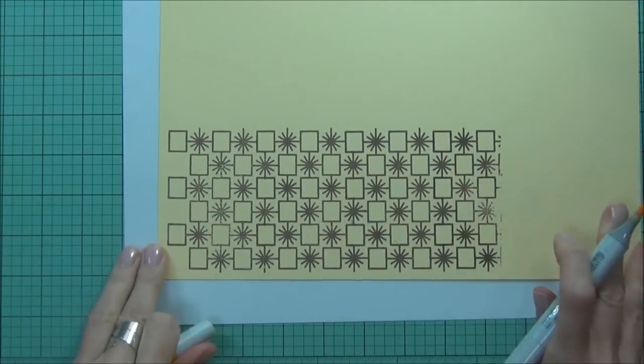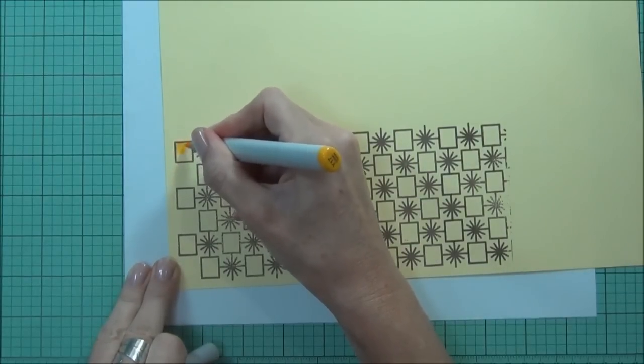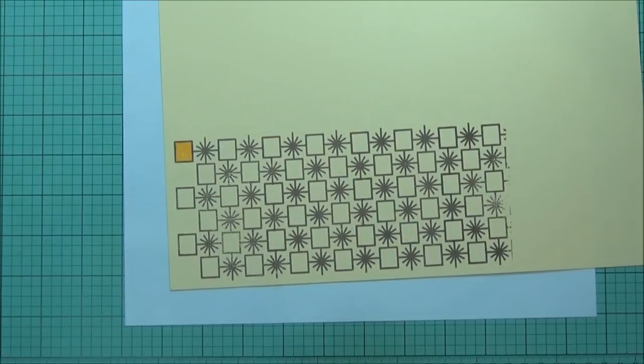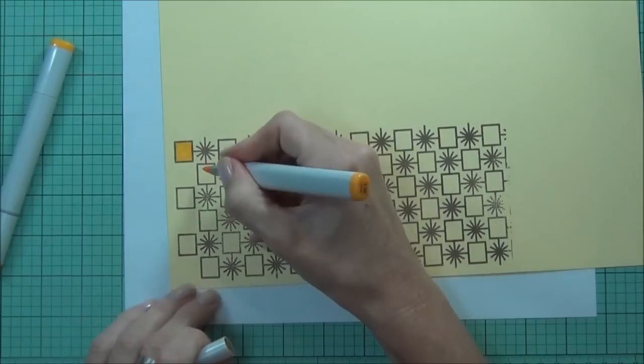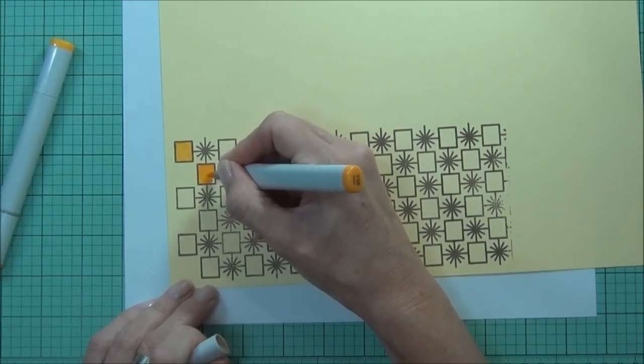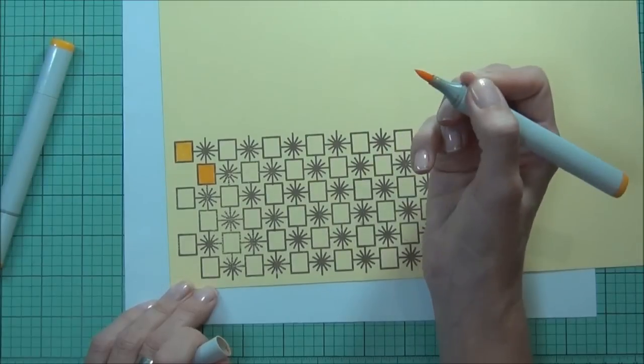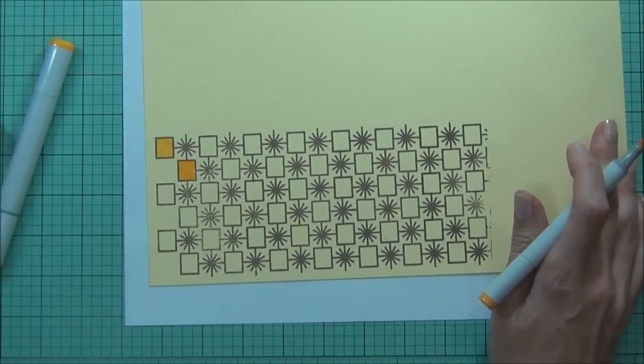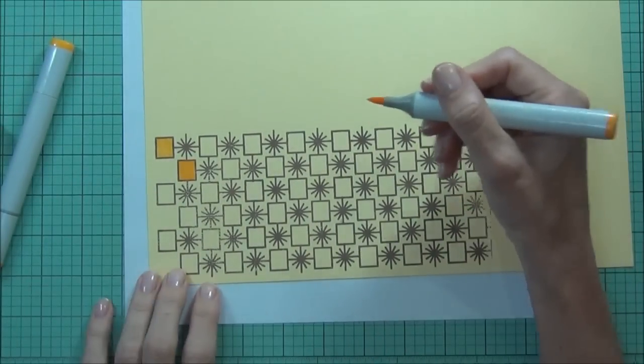Now I purposely use the Memento ink because I want to use some Copic markers to add color. I'm just doing a bit of a test patch here and seeing which color orange I think might look better. They look much the same. Maybe the bit darker one which is Y38. So I'll just go through now and color my squares.